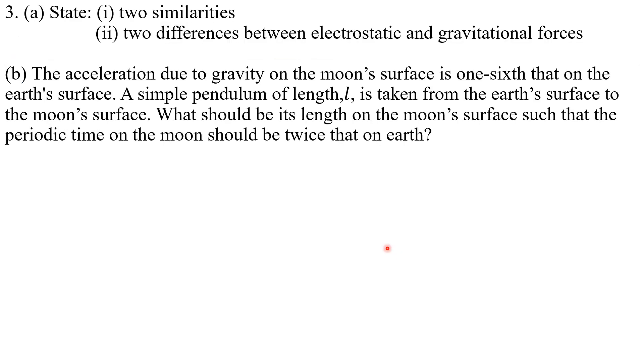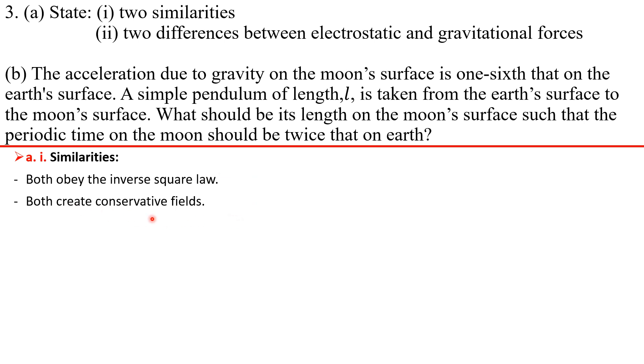So, two similarities between gravitational and electrostatic field. Both obey the inverse square law. The magnetic field does not obey the inverse square law, so let's just be clear on that. Both create conservative fields.